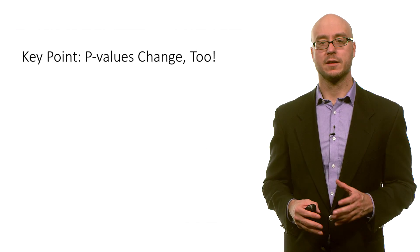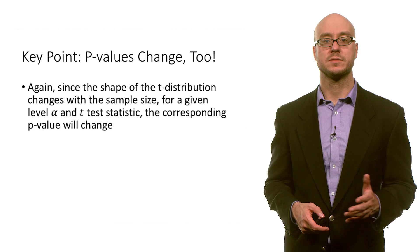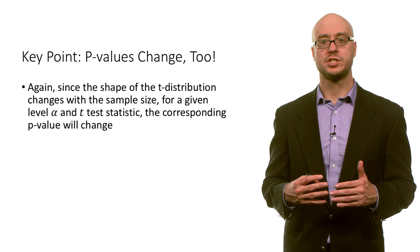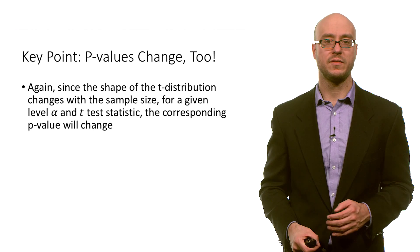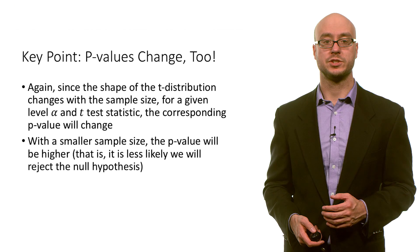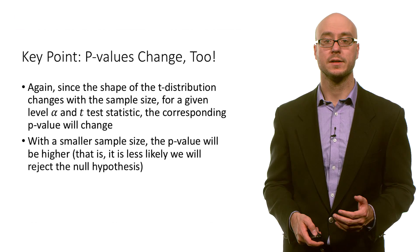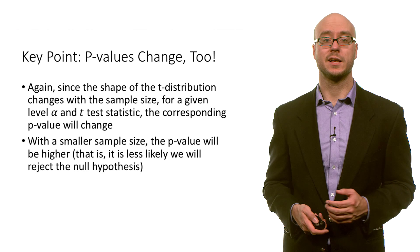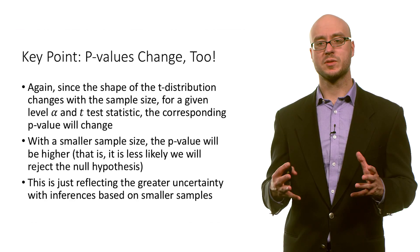Now, the key point here is that our test statistics and p-values all change. Since the shape of the t-distribution changes with the sample size, for a given level of alpha in a t-test statistic, the corresponding p-value will change. With a smaller sample size, the p-value will be higher — that is, it is less likely we will actually reject the null hypothesis. This just reflects the greater uncertainty with inferences based on smaller samples.